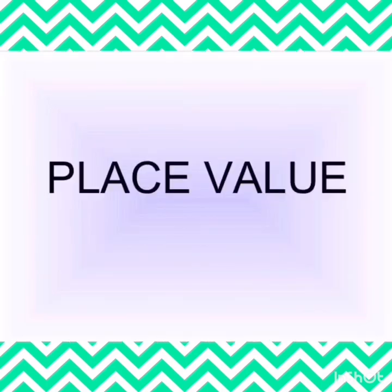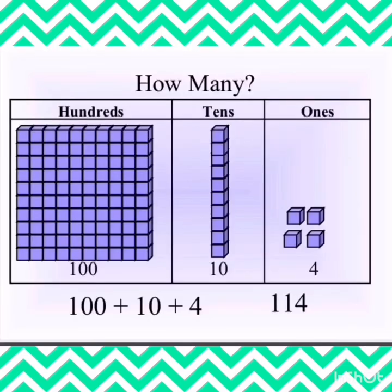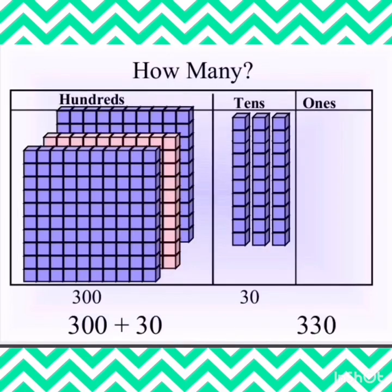Next is place value. Whenever we recognize a number and put it under its right place value, it is called the place value system. Let's see — we have the number 114: 4 blocks of ones go under the ones position, 1 tall block of tens goes under the tens position, and 1 big block of hundreds makes 114. Next we have 330: nothing goes under the ones position because it's 0, 3 tall blocks of tens make 30, and 3 big blocks make 300.